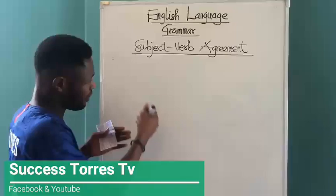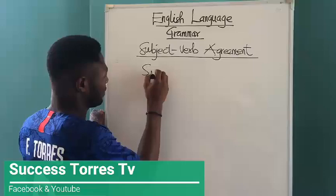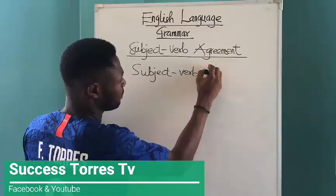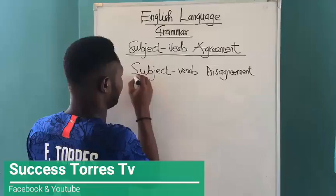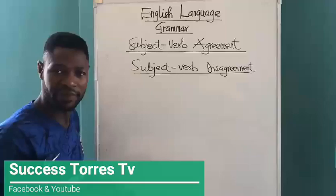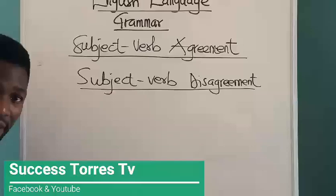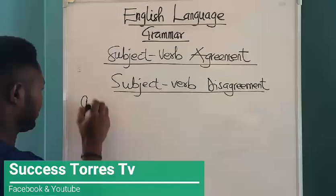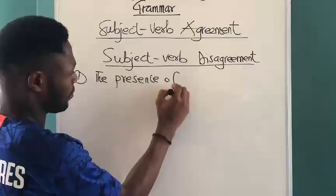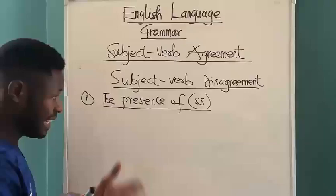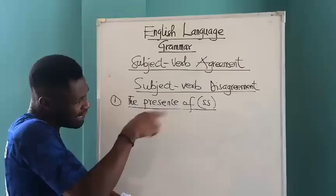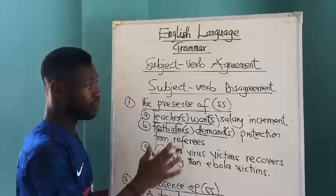We will look at all the inflections, because we inflect verbs through conjugation. But before we do that, let's look at subject-verb disagreement. Before we even get there, let's look at the disagreement. The disagreement here has to do with the noun or subject being singular and then the verb being plural, and vice versa. Let's look at some examples. The presence of double S in a statement with respect to the subject and the verb is an error in grammar, and for that matter it doesn't go in line with the rule of subject-verb agreement. So these examples are all subject-verb disagreement.